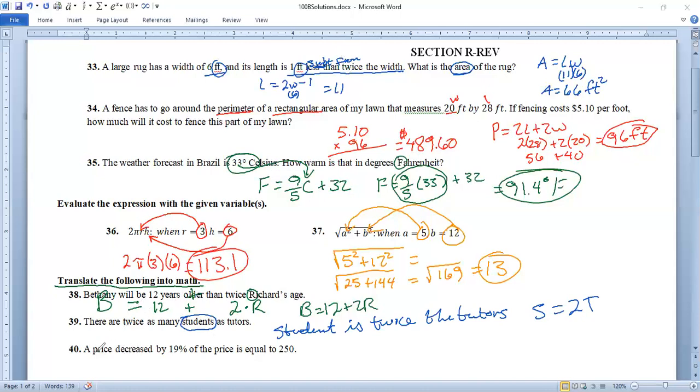Number 40, a price, here's P price decreased by that subtraction 19%. That's 0.19 of times the price P is equal to 250 price decreased by 19% of the price equals 250. That should do it.